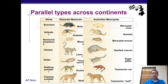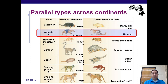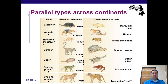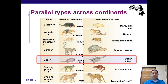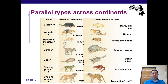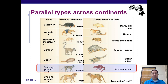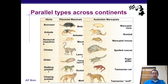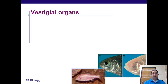Here are different examples of parallel evolution you can see: anteaters, different types of nocturnal insectivores, different climbing animals, gliding animals, and predators that stalk versus predators that chase, and so on.